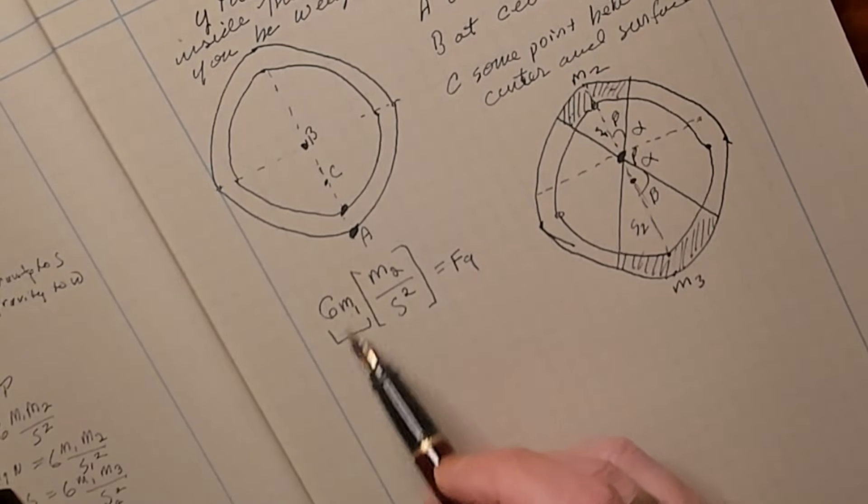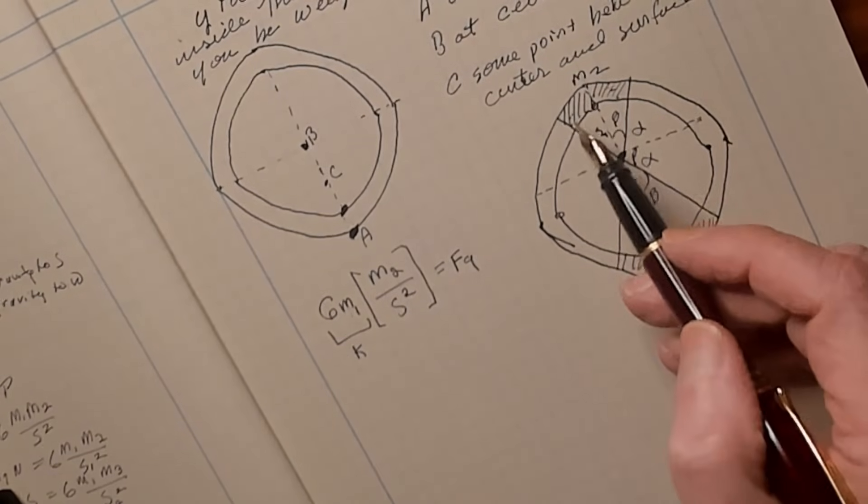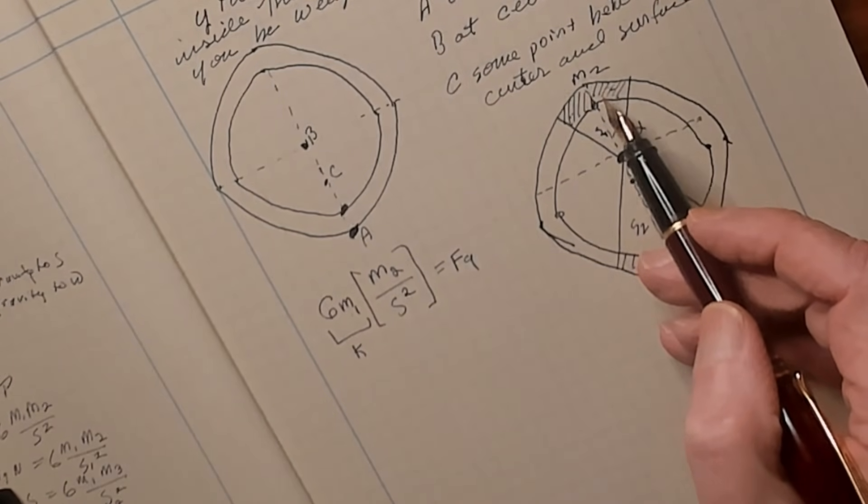Now because big G and mass 1 don't change at all during this problem, I'm just going to call them K. And here's the guts of what we're dealing with. But how do we calculate what mass 2, this area up here, is going to be?